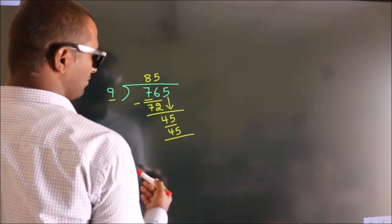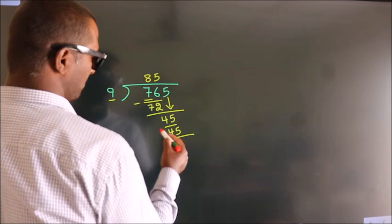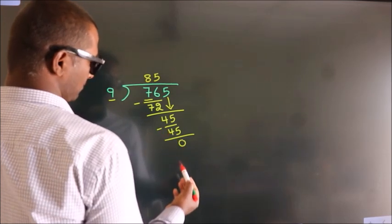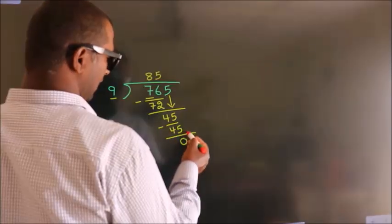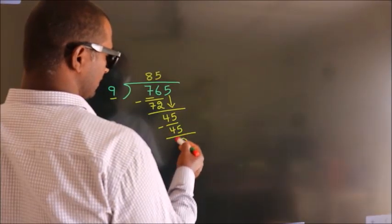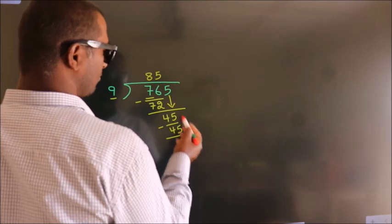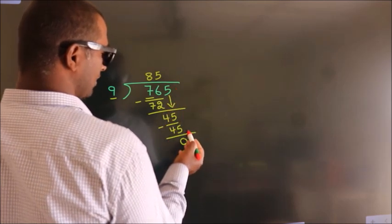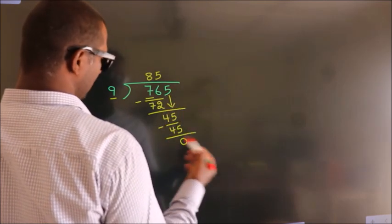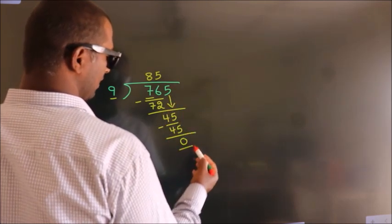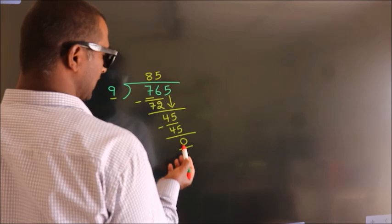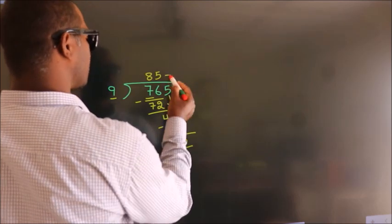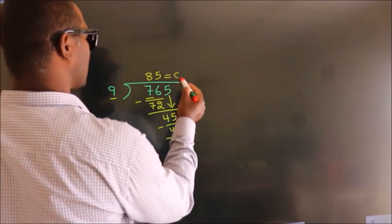Now we subtract and we get 0. After this, there are no more numbers to bring down and we got remainder 0. So this is our quotient.